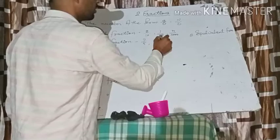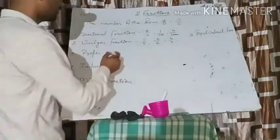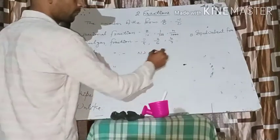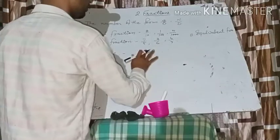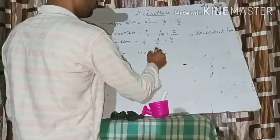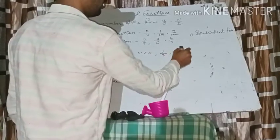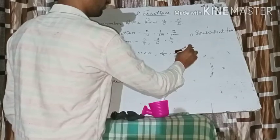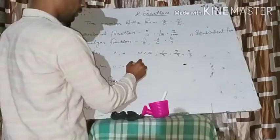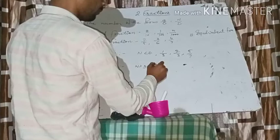Next is proper fraction — in a proper fraction, the denominator is greater than the numerator, like one upon three, two upon three, five upon seven. In an improper fraction, the numerator must be greater than the denominator, like three upon two, four upon three, five upon four.